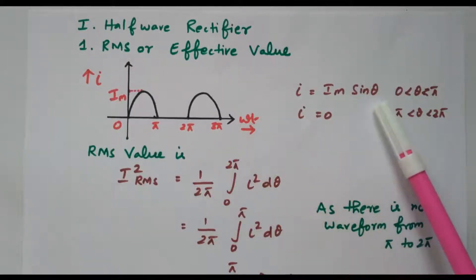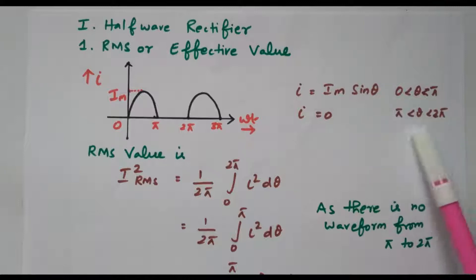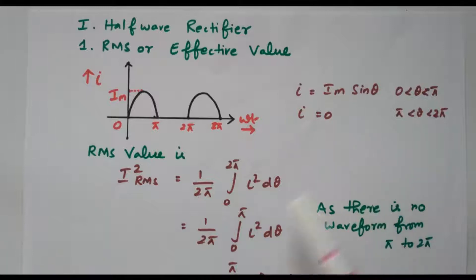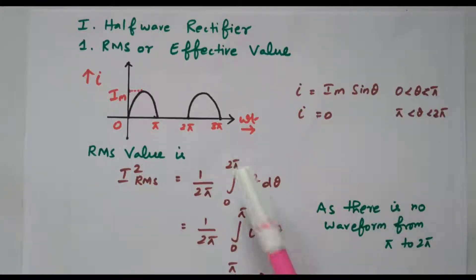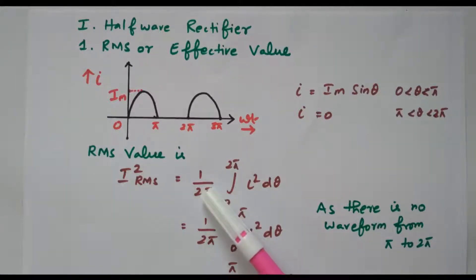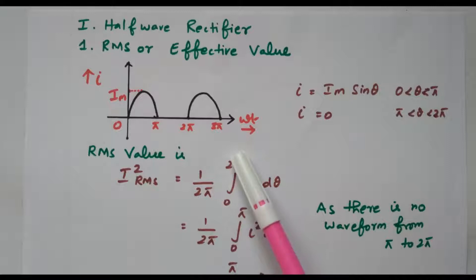The general formula applicable for 0 to π is I = Im·sinθ. From π to 2π the current is 0. Based on that we will go for the derivation. IRMS² = (1/2π) ∫₀²π I² dθ. This is the base period — we consider the full cycle, so the limit is also 0 to 2π.